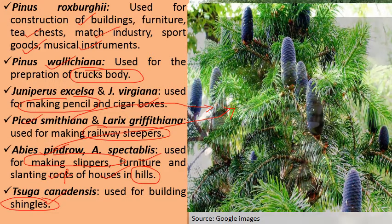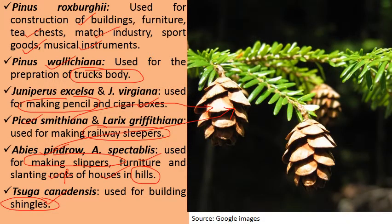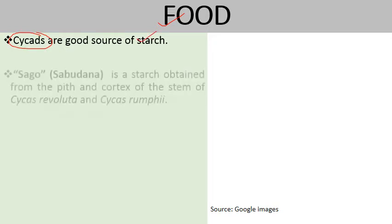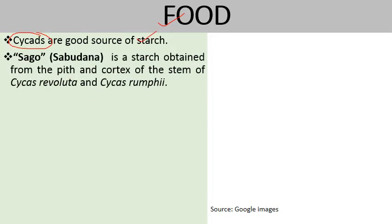As a source of food items, cycads are a good source of starch. One of the famous items obtained from Cycas is Sago, also known as Sabudana, which is made using starch extracted from the pith and cortex of the Cycas stem.